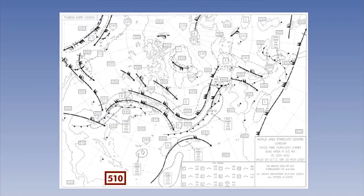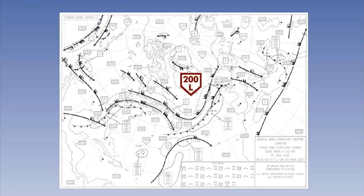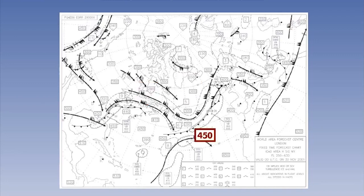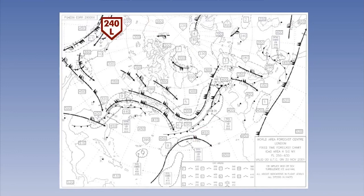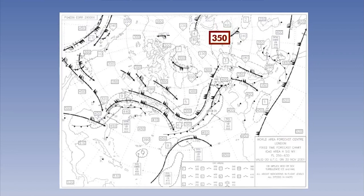Occasionally, the structure of the troposphere is such that there are several abrupt changes in temperature — in a sense, there are several tropopauses. The tropopause heights included on the high-level WAFC SIG weather charts are the ones most significant to aviation. The heights displayed on the charts relate to the lowest temperatures in the troposphere.